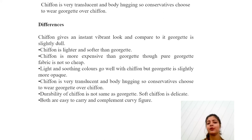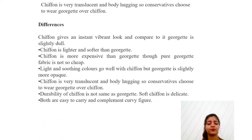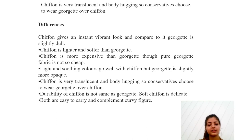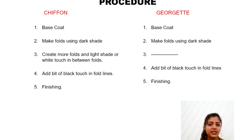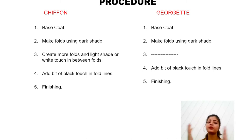Light and soothing colors go with chiffon, but georgette is slightly more opaque. Transparency in georgette is less than in chiffon, as shown in the previous picture. This is the difference we need to remember. Then, the durability of chiffon is not the same as georgette — soft chiffon is delicate. Both are easy to carry and complement every body figure. For illustration, we need to know the procedural difference while rendering chiffon versus georgette.